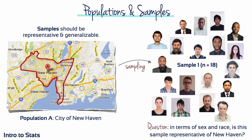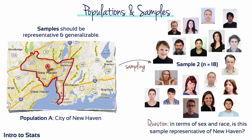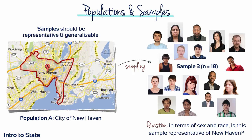If we studied sample 1, could whatever we learned be applied to the larger population of New Haven? What if we used sample 2 instead? Or sample 3 — same question. If we had to choose one of the three, sample 3 is the most representative in terms of sex and race.